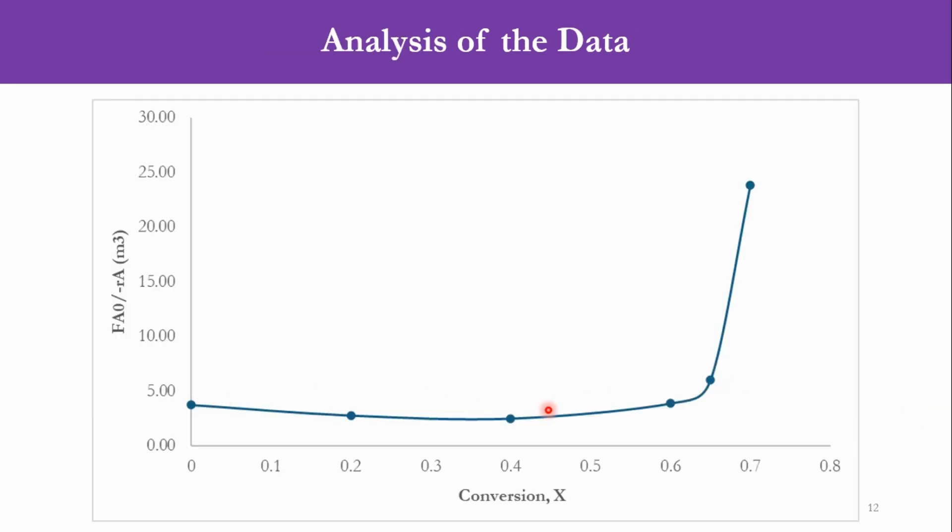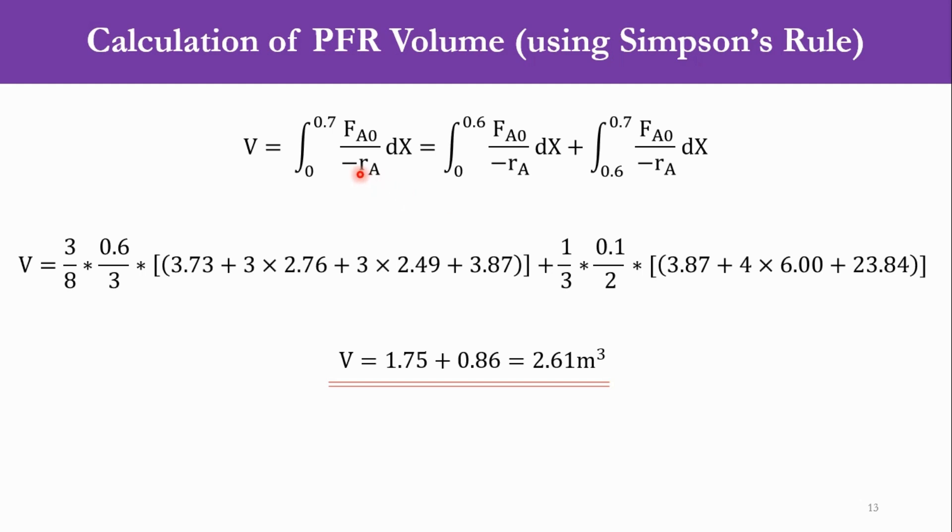If we want to represent it graphically, this is the graphical representation which represents the graph between the conversion X and FA0 over -rA. Now you can see that the nature of the graph here till this point is approximately or the slope of the point is very little. But if you look at this region which is from 60 to 70%, you can see the abrupt change. So it means that if you want to calculate the volume of the PFR, you have to divide it into two segments. First segment is from 0 to 0.6 and the second segment will be from 0.6 to 0.7.